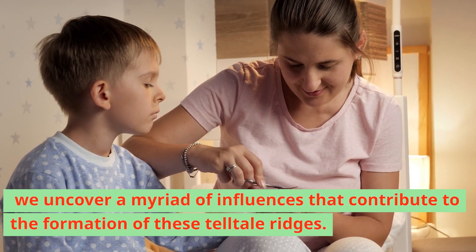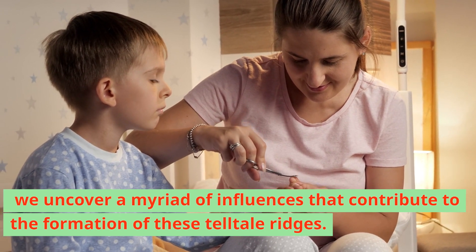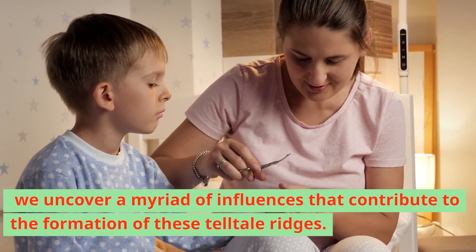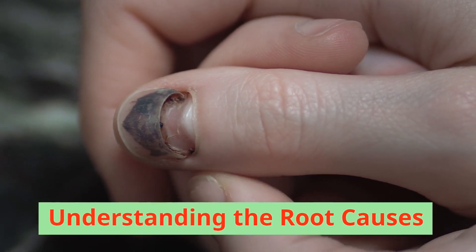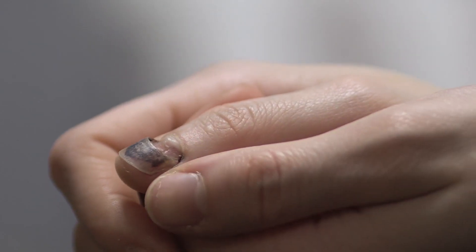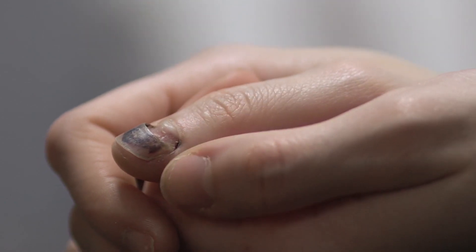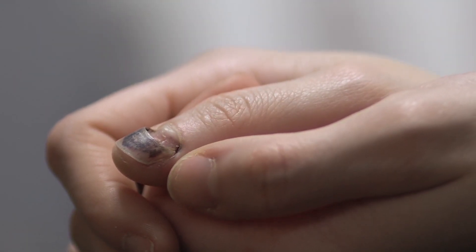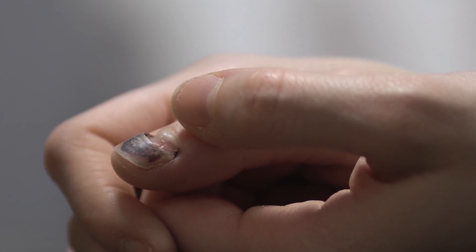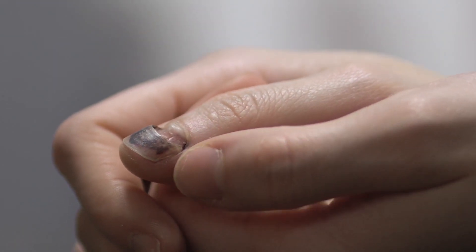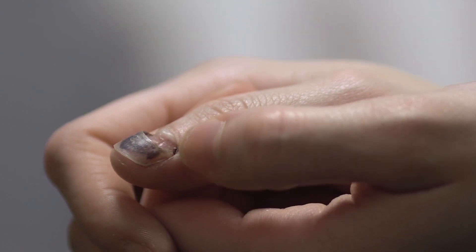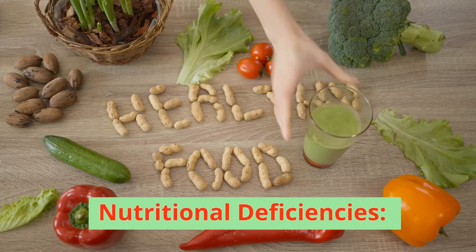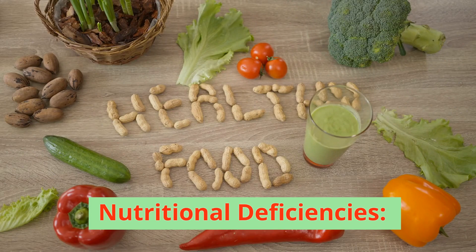Delving deeper into the underlying factors, we uncover a myriad of influences that contribute to the formation of these telltale ridges. Understanding the root causes: Vertical ridges on nails can stem from a variety of underlying factors. Nutritional deficiencies in essential nutrients such as iron, vitamin B12, and biotin can compromise the health of nails, leading to the formation of ridges.